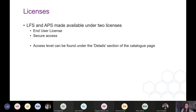An important thing to note is that different datasets are available under different licences. The Annual Population Survey and the Labour Force Survey are both available under both the end user licence and also through secure access. If you're looking to find the access level for a dataset, on the catalogue page under the details section, there's a little box that says 'access' and it will say either end user licence or secure.